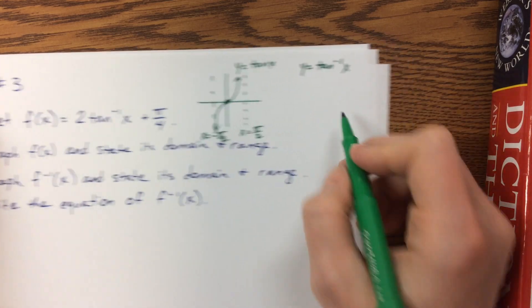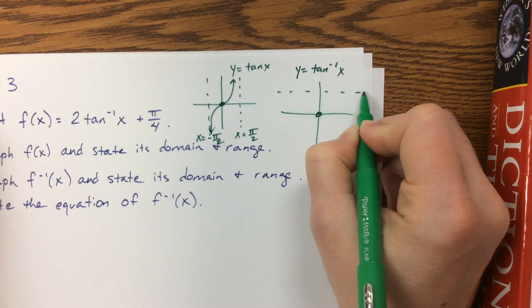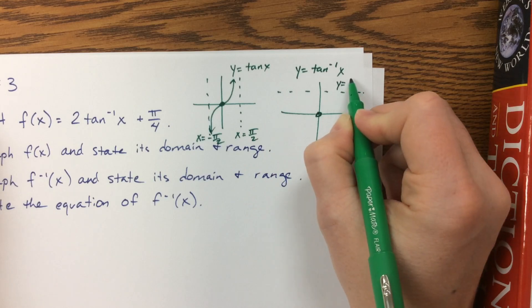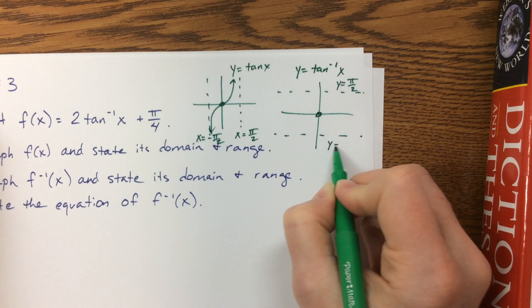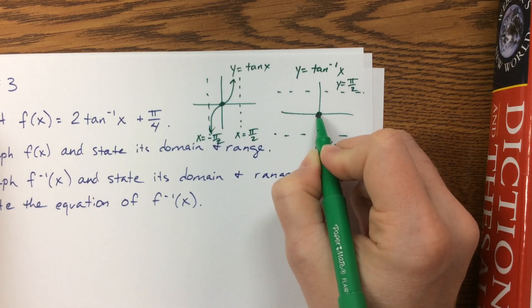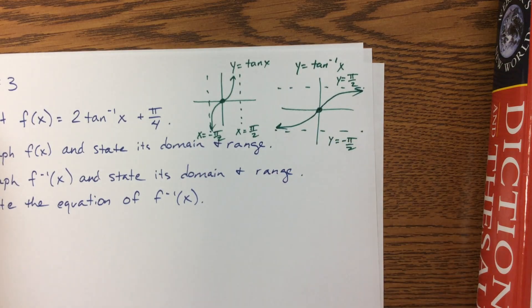So the inverse of tangent looks, well here, this is now x and y switched, so this is now y equals π/2, and down here I have y equals negative π/2, and then we're starting growing this way, and we grow that way, and there's our lovely graph.